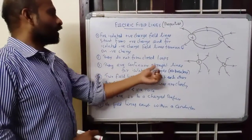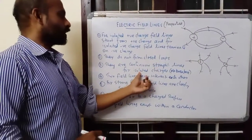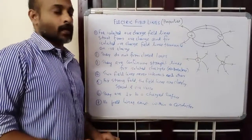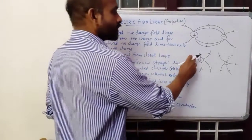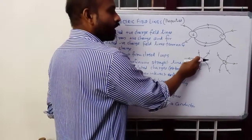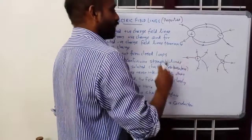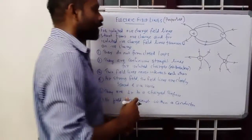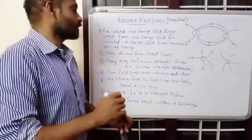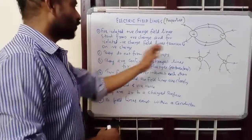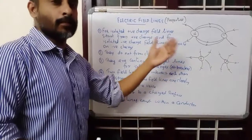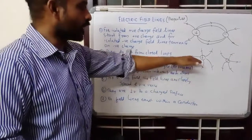Field lines are continuous straight lines for isolated charges. These lines will be continuous and cannot break anywhere — there are no breaks between field lines. For one field line, there will not be any break; it will be continuous.